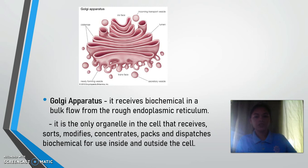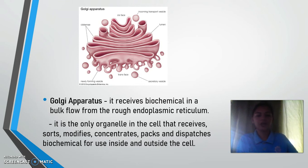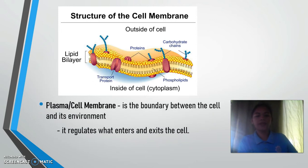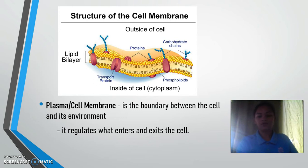The Golgi apparatus receives biochemicals in bulk flow from the rough endoplasmic reticulum. It is the organelle in the cell that receives, modifies, and concentrates biochemicals for use inside and outside of the cell. The cell membrane, also called the plasma membrane, is the boundary between the cell and its environment, and it regulates what enters and exits the cell.